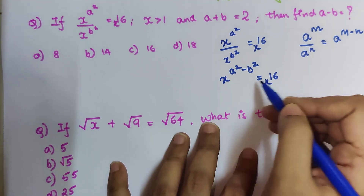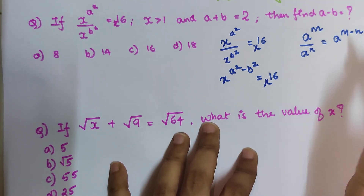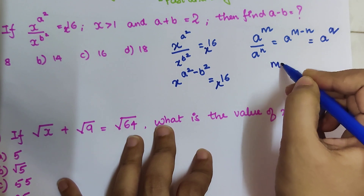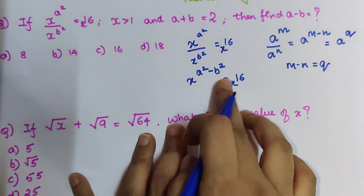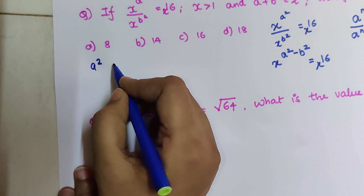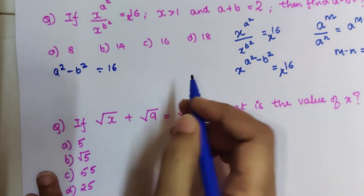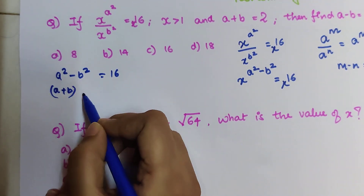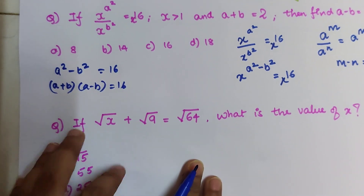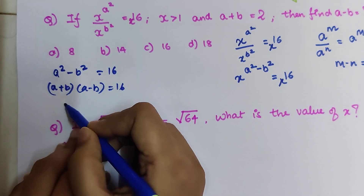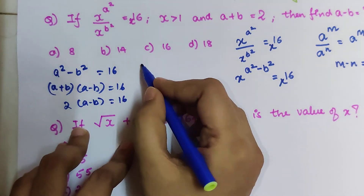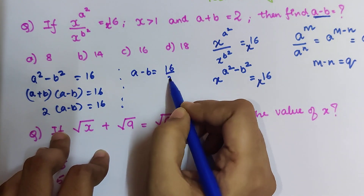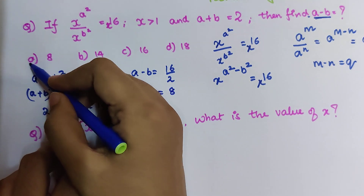Since the bases are the same, we equate the exponents: a² minus b² equals 16. Now, a² minus b² can be written as (a + b)(a − b) = 16. We are given that a + b = 2, so substituting: 2 times (a − b) = 16. Therefore a minus b equals 16 divided by 2, which gives us the answer of 8.